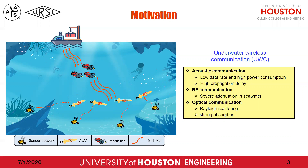The third one is optical communication — it's very fast, but it has strong absorption and scattering. To address these issues, we propose to use the magnetic induction coil to realize underwater wireless communication. Although the operating distance is limited between two coils, we can use multiple coils as relay coils to achieve long-distance communication. As you can see in the left figure, the sensor network sends data to the AUVs, and the AUVs send the data to the robotic fish, and finally the robotic fish can send the data to the service station. We call this the uplink.